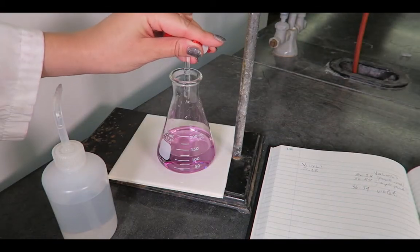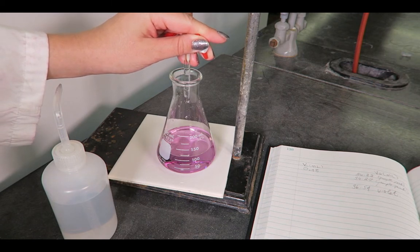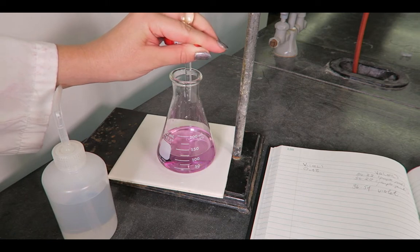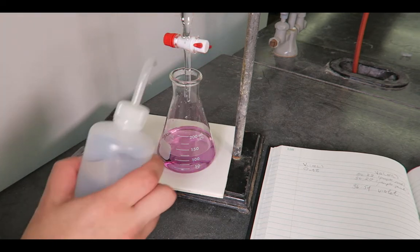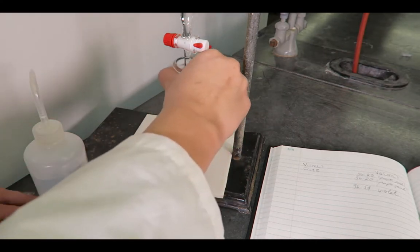During a titration, when the color of the indicator begins to change, it means that the endpoint is approaching. In some cases, the endpoint is vague due to a slow, delayed, or drawn-out color change. Under these circumstances, extra care must be taken to ensure accuracy.